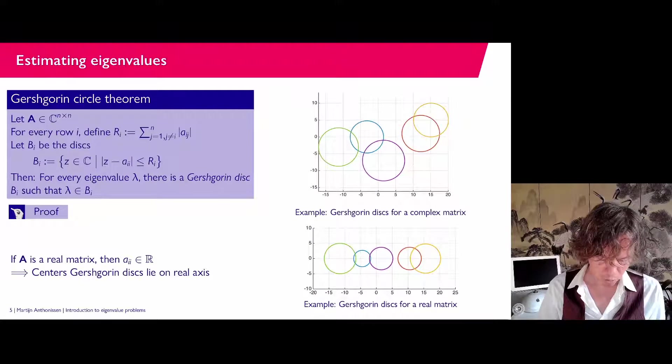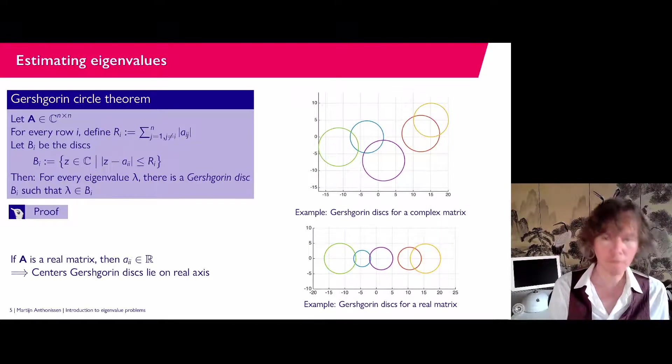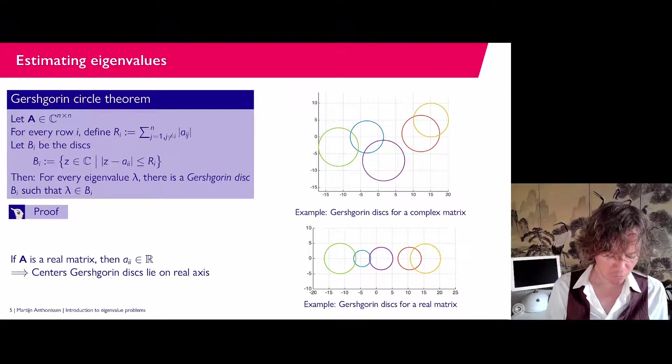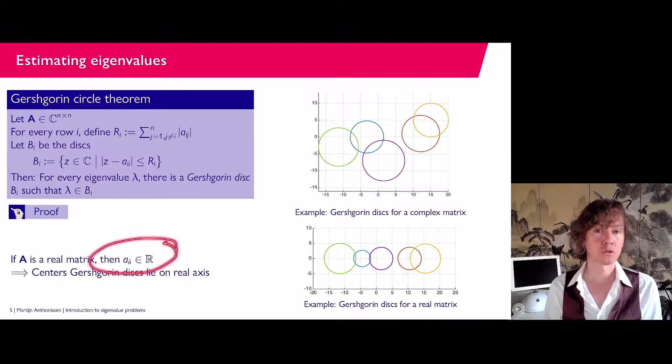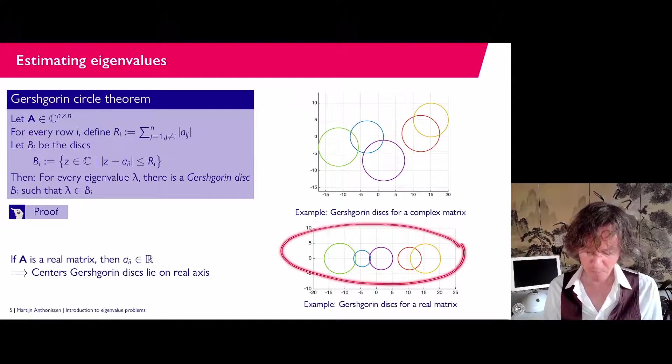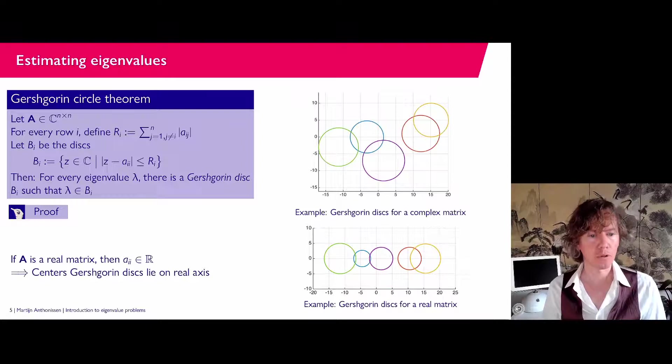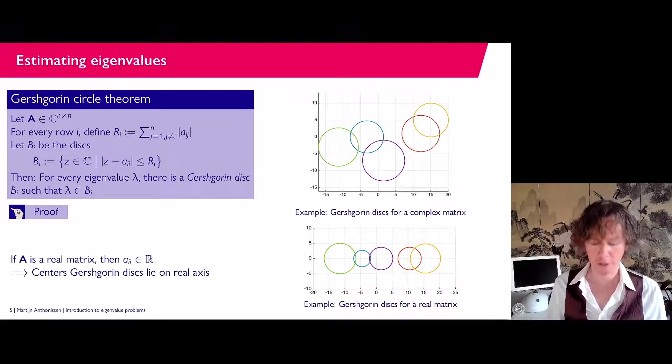Now, there is one more note here on the slide, which is that if you are working with a real matrix, I assumed we have a complex matrix. If you assume that your matrix is real, then all the diagonal entries are also real, of course, which means that all these disks have as a center a point on the real axis. So the centers of the Gershgorin disk lie then on the real axis.